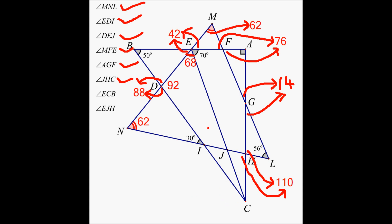What about angle ECB? Take a look at triangle BEC. These two angles together — 68 plus 42 is 110. And this is 50. These three angles — this angle plus this whole angle plus this angle — should be 180. So from 180, if you subtract 110, you get 70, and from 70 if you subtract 50, you get 20. So this has to be 20.